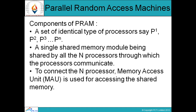Next, parallel random access machines — we can call this PRAM. The components of PRAM are: first, a set of identical type of processors P1, P2, P3 through PN. Second, a single shared memory module shared by all the N processors through which they communicate. Third, a memory access unit (MAU) to connect the N processors so that all processors can access the shared memory.